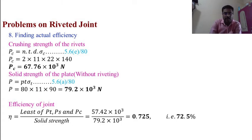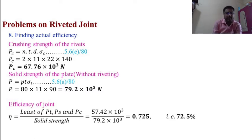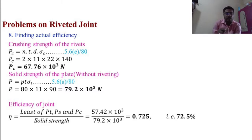We now have Ps = 79.827 × 10³ N, PT = 57.42 × 10³ N, and Pc = 67.76 × 10³ N. The solid strength of the plate without riveting: P = p × t × σt = 80 × 11 × 90 = 79.2 × 10³ N.